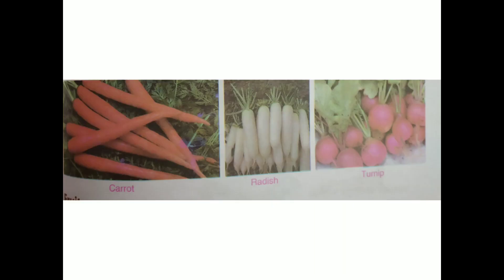Now see the diagram of the carrot. Here are different roots — this is carrot, this is radish, this is turnip. When you have to draw roots of the plant which are used as vegetables, you will draw carrot, radish and turnip.